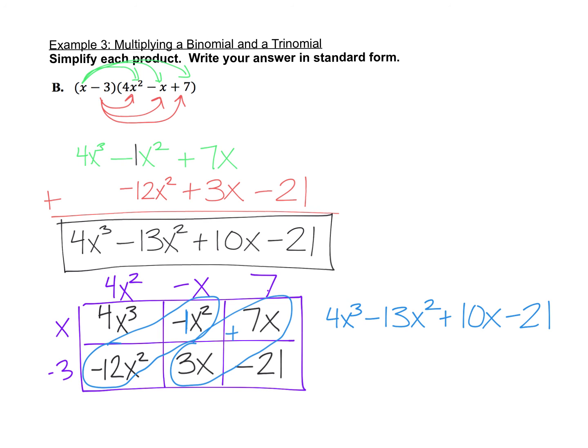You decide which method you like best for a binomial times a trinomial. Most students in past years have preferred the box method, but if you're comfortable with the FOIL pattern and drawing your arrows, go right ahead. Either way you get the same answer. This concludes Lesson 6.5 Day 2. Thanks for watching and good luck as you try some problems on your own. Bye!